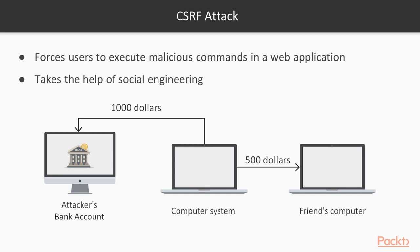For example, this is your bank account which you have opened on your PC, and this is your friend's bank account. You want to send $500 from your account to your friend's account. If a CSRF attack is already present in your browser, when you try to send this money, CSRF will automatically change the amount to $1000 and send it to the attacker's account instead of your friend's account. You have no awareness about it, but your browser is doing it automatically using CSRF.